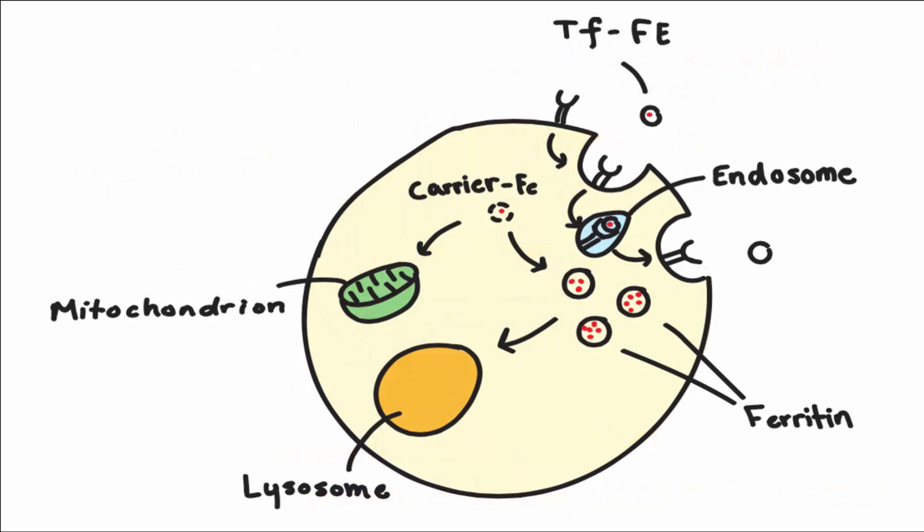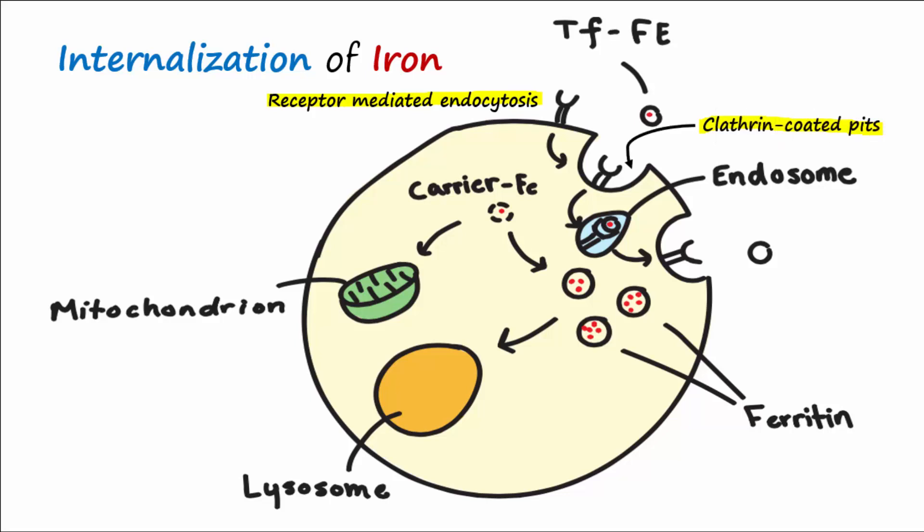After binding, both the iron-bound transferrin and transferrin receptor complex are internalized by receptor-mediated endocytosis. This process involves invagination of the clathrin-coated pits and formation of a vesicle called an endosome.